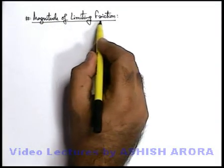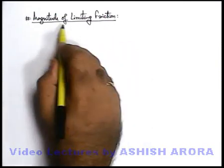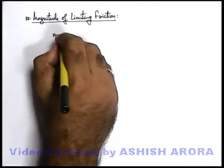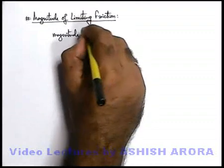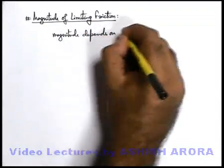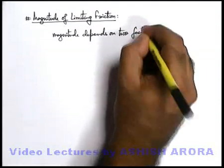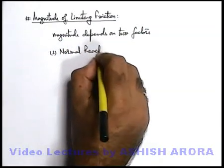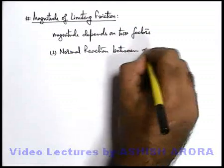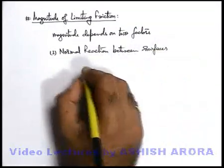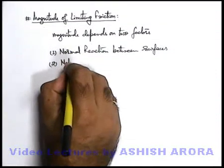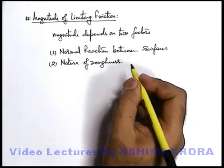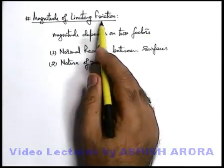Now we talk about the magnitude of limiting friction. As we have discussed, limiting friction is the maximum magnitude of static friction. This magnitude depends on two factors: the very first is the normal reaction between the surfaces, and the second is the nature of roughness. Obviously, if roughness is more and surfaces are more irregular, the value of limiting friction will be high.